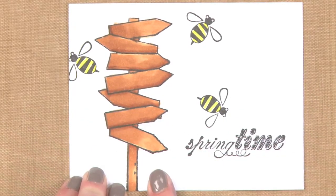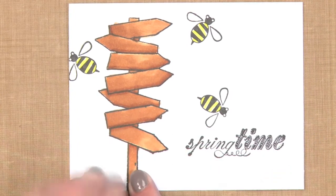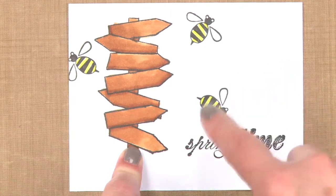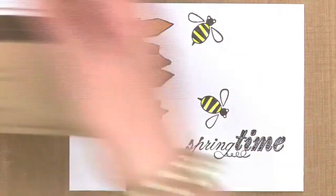For example, this sample here uses stamps from two different sets. The post here and the sentiment come from one stamp and the bees come from another. And let me show you.